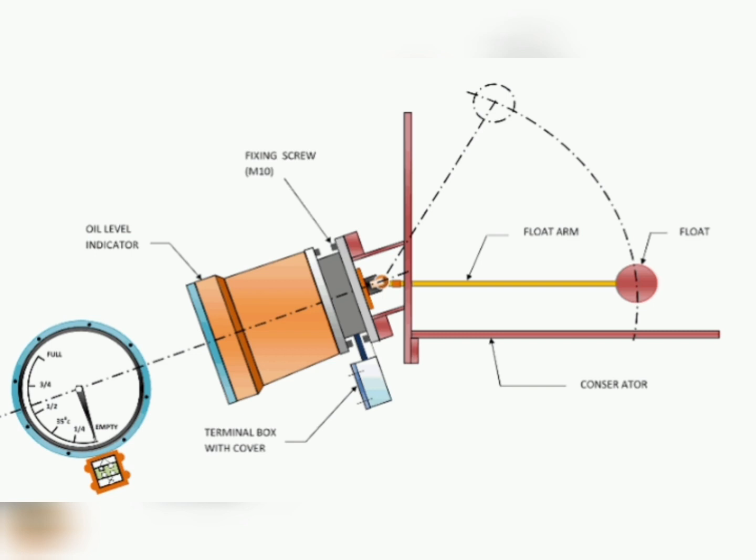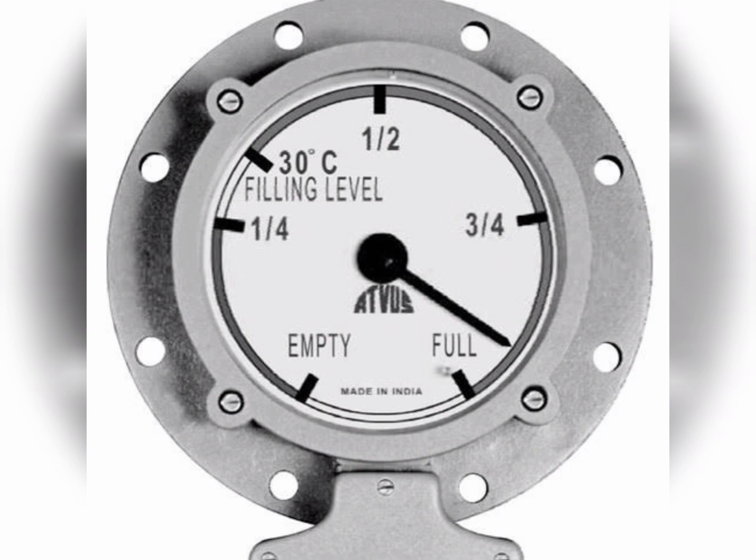The MOG operates by using a magnetic float suspended inside the transformer tank, connected to a magnetic sensor that detects the position of the float. When the float moves up or down with the oil level, the sensor sends a signal to the gauge or indicator, which displays the oil level. The MOG can also be connected to an alarm or trip mechanism that interrupts the flow of electricity to the transformer when the oil level is too low, preventing damage caused by lack of oil. It is common practice to install the MOG in combination with other protection devices such as an oil surge relay and pressure relief valve.